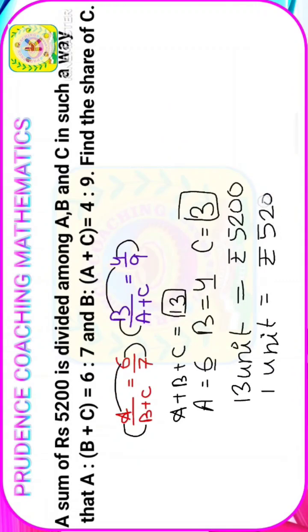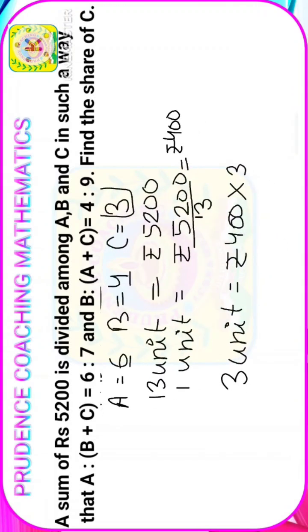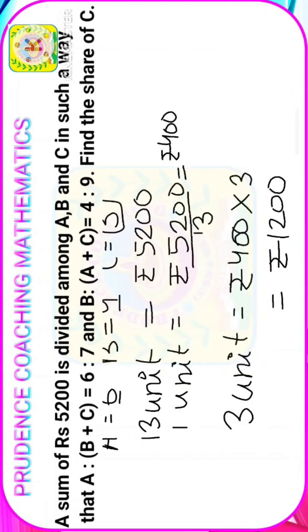So 1 unit will be equal to rupees 5200 divided by 13, you will get rupees 400. Now you are asked to find out the value of 3 units, so 3 units will be equal to rupees 400, that is the value of 1 unit, into 3, so it will be rupees 1200. So C will get rupees 1200.